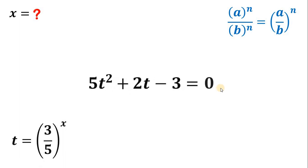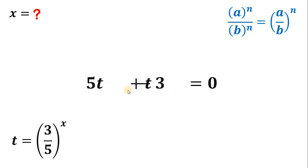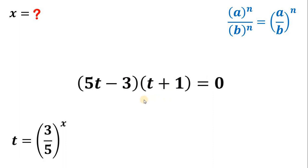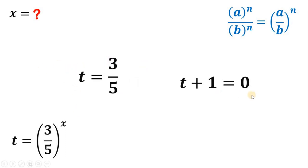So what we're going to do is solve for the value of t. First, rearrange the terms and equate to 0. We get 5t squared plus 2t minus 3 equals 0. Factoring this quadratic equation gives us 5t minus 3 multiplied by t plus 1 equals 0. Since the product equals 0, at least one factor must equal 0. So either 5t minus 3 equals 0 or t plus 1 equals 0. From the first equation, adding 3 and dividing by 5 gives t equals 3 over 5. From the second equation, subtracting 1 gives t equals negative 1.